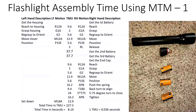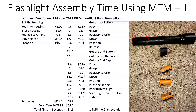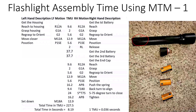Here is an example of a flashlight assembly using the MTM-1 system. I'm going to use my left hand to grab the flashlight housing first, so I'll reach for the flashlight housing. Let's assume it is 12 inches away. The coding for this is R12A — let me explain that.